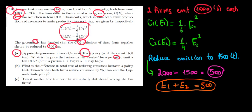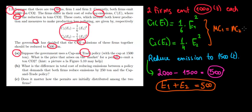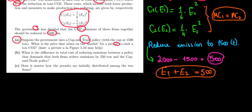Since this is a cap and trade policy, to achieve the optimal level we want the marginal costs of the firms to be equal — meaning the marginal cost of firm one must equal the marginal cost of firm two. That's the second relationship. We will solve a system of equations based on both conditions.